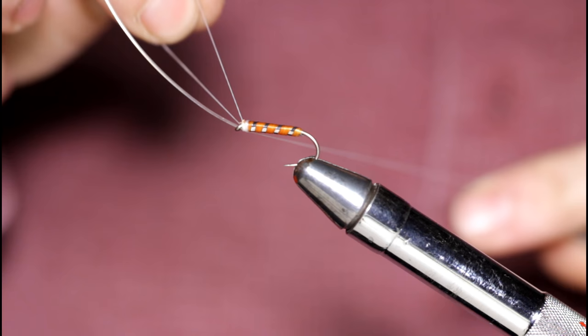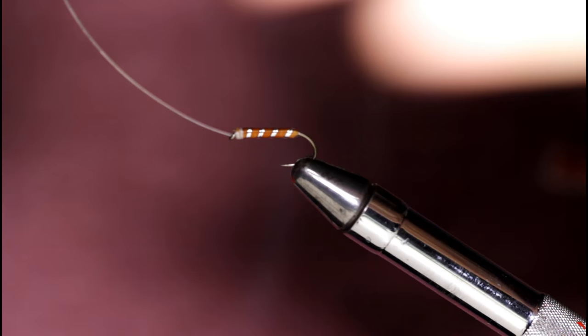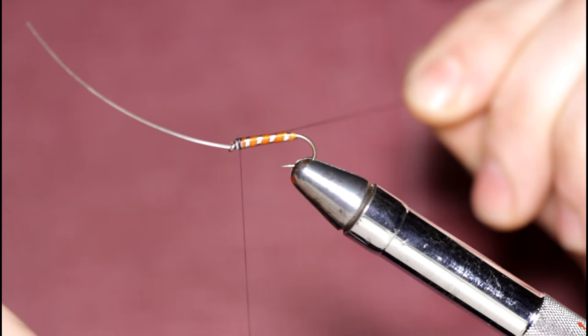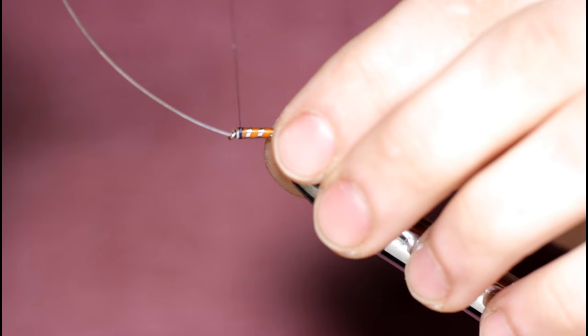And finish this hook up with some black thread. And I'll just snip the tag off this black thread. And I'm just going to build up the thread enough to add some color here.